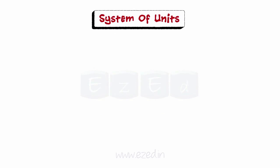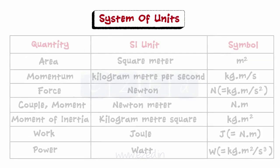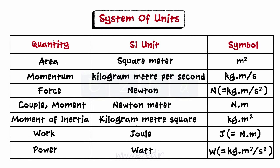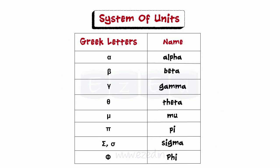The system of units extensively used in this course is the SI unit system. Length, mass, and time are the basic units in mechanics. The units of all other quantities may be expressed in terms of these basic units. The major quantities used in mechanics along with their SI units are as shown. When some quantities are too big or too small, we use certain prefixes. In mechanics, we regularly use a number of Greek letters to denote certain quantities. Some common Greek letters and their names are as shown.